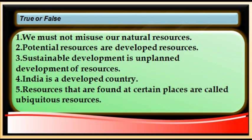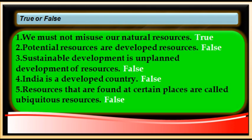Now let's do true and false. Number one: we must not misuse natural resources. Number two: potential resources are developed resources — true or false? Number three: sustainable development is unplanned, irrational development of resources. Number four: India is a developed country. Number five: resources found in certain places are called ubiquitous resources.